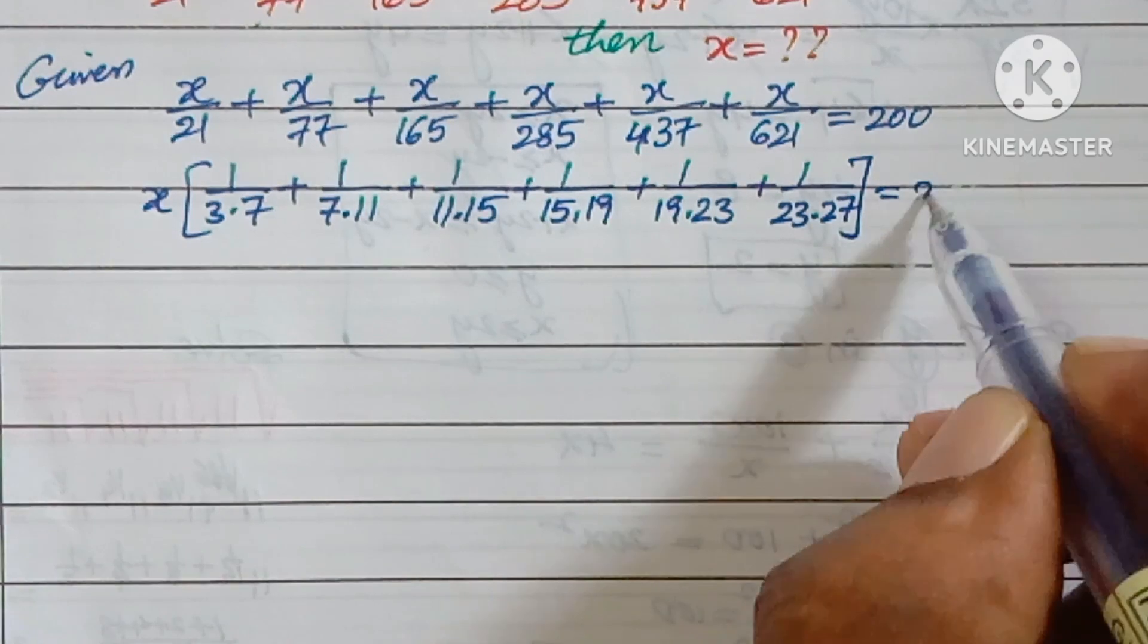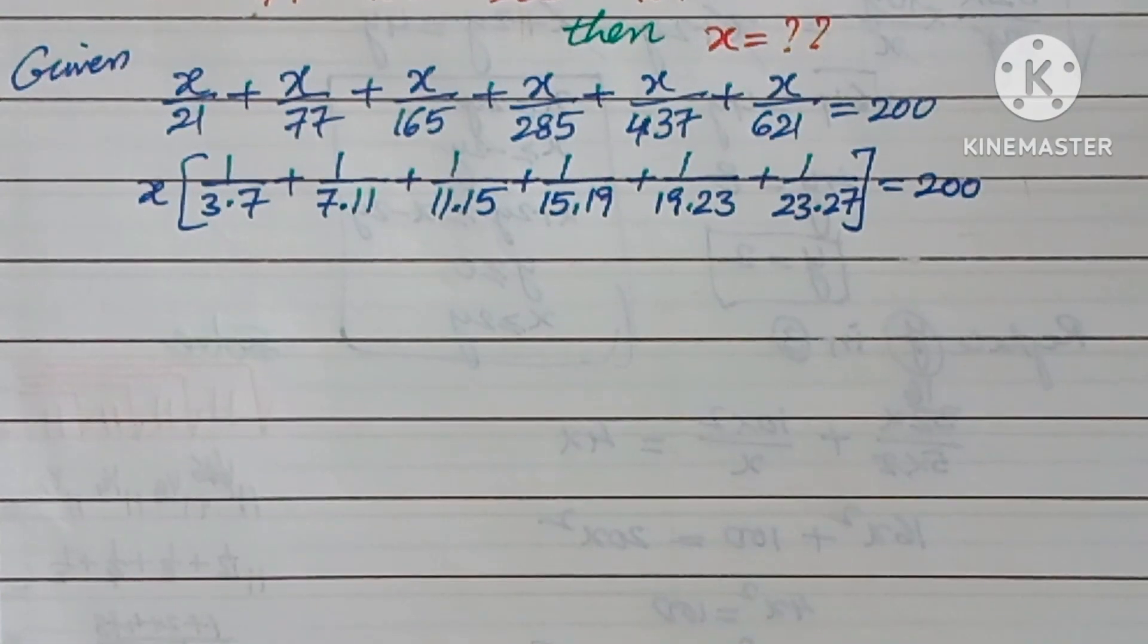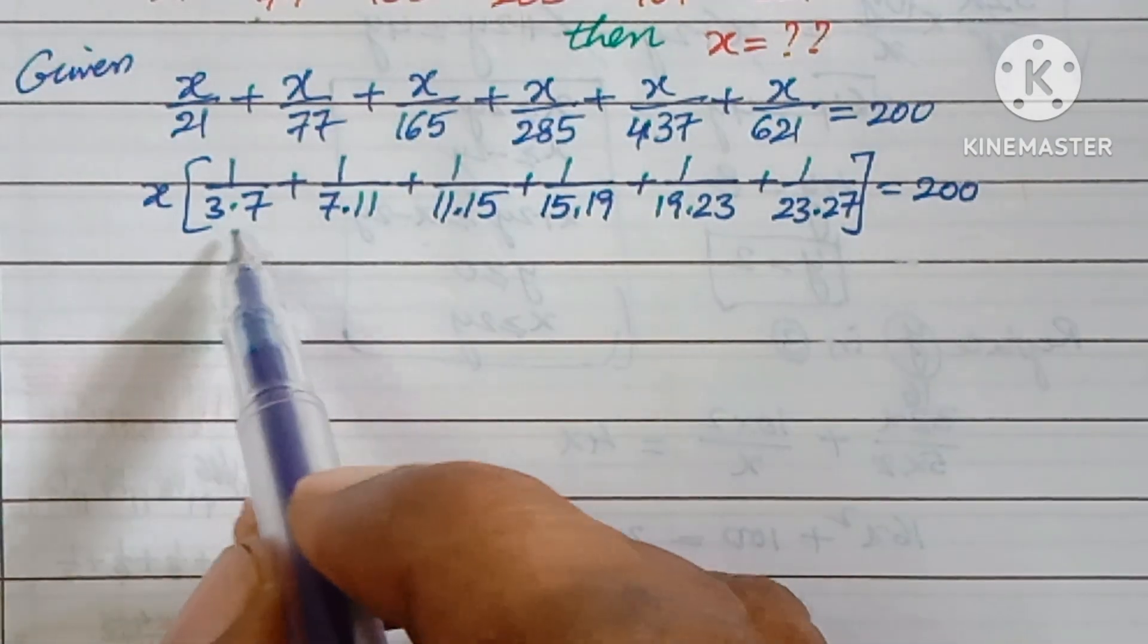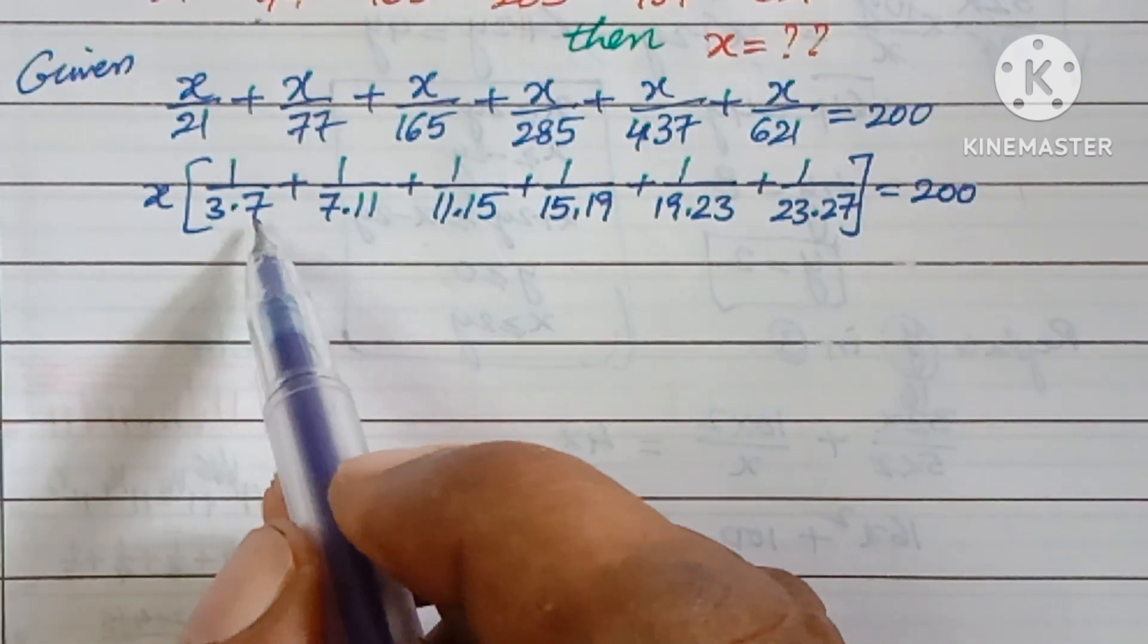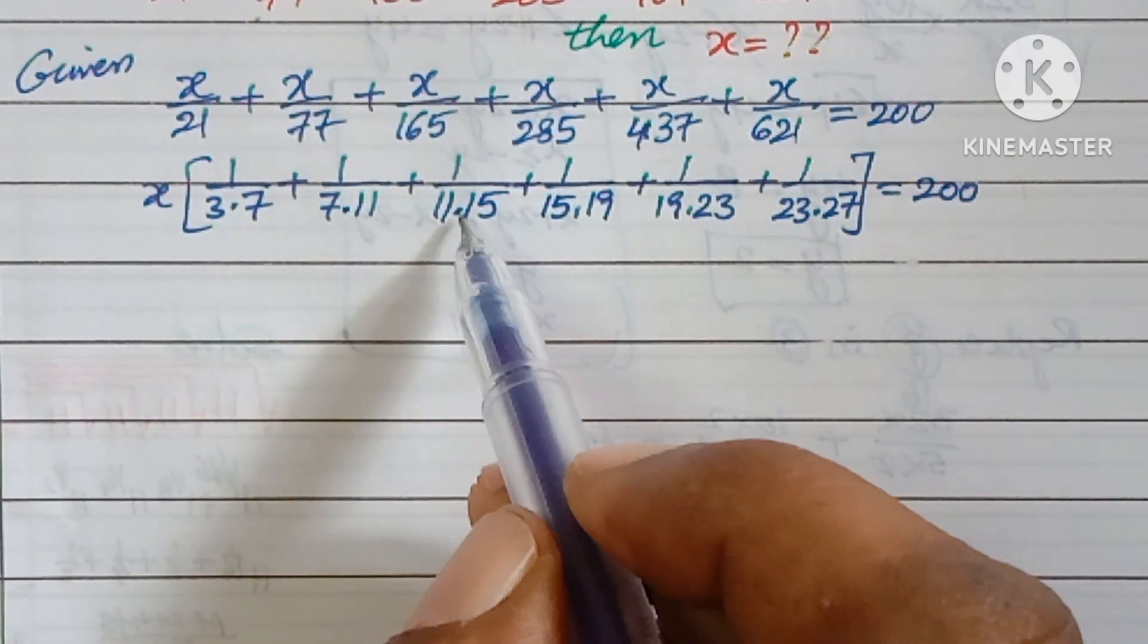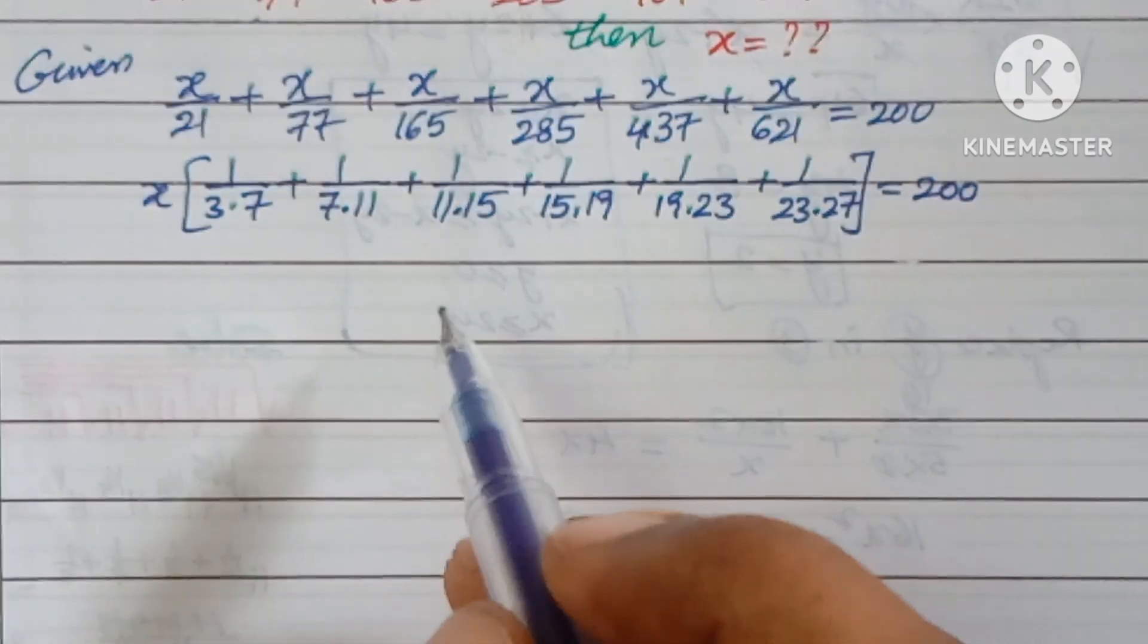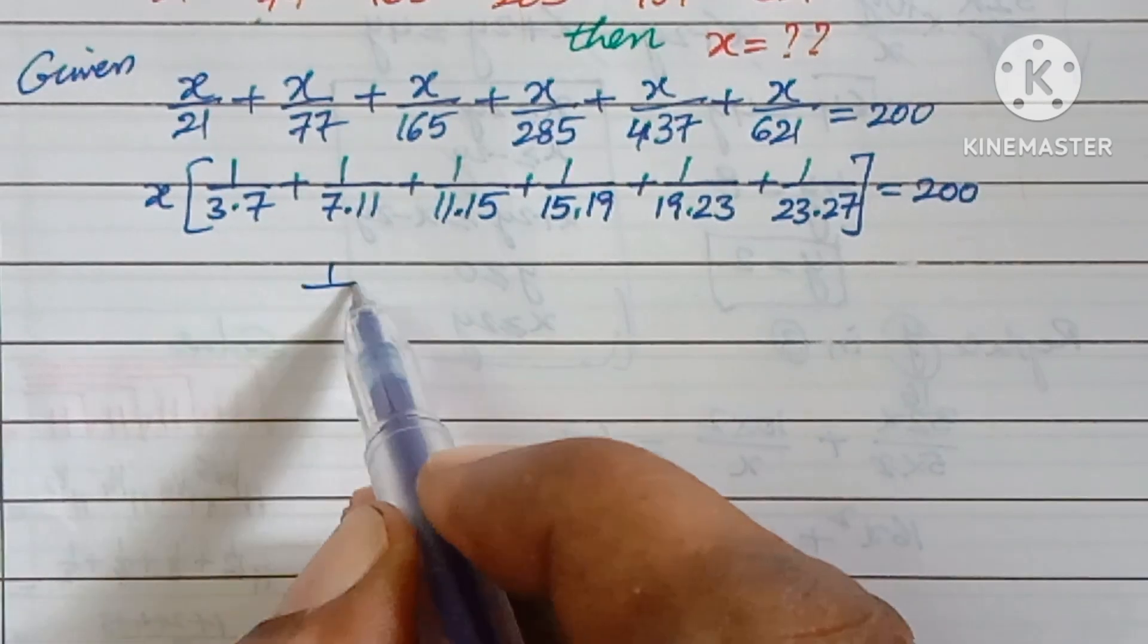They are following one pattern that you have to observe. Alternately we are having odd numbers: 3, 7, 11, 15, 19, 23, 27. Numbers like 5, 9, 13, 17, 21 are missing. The problem is given in this pattern.